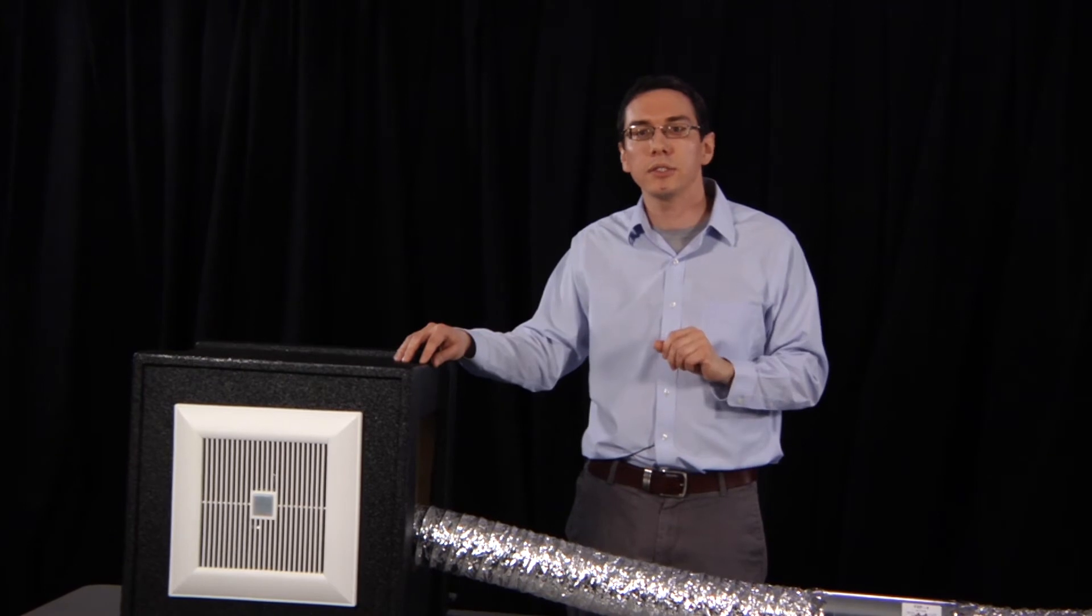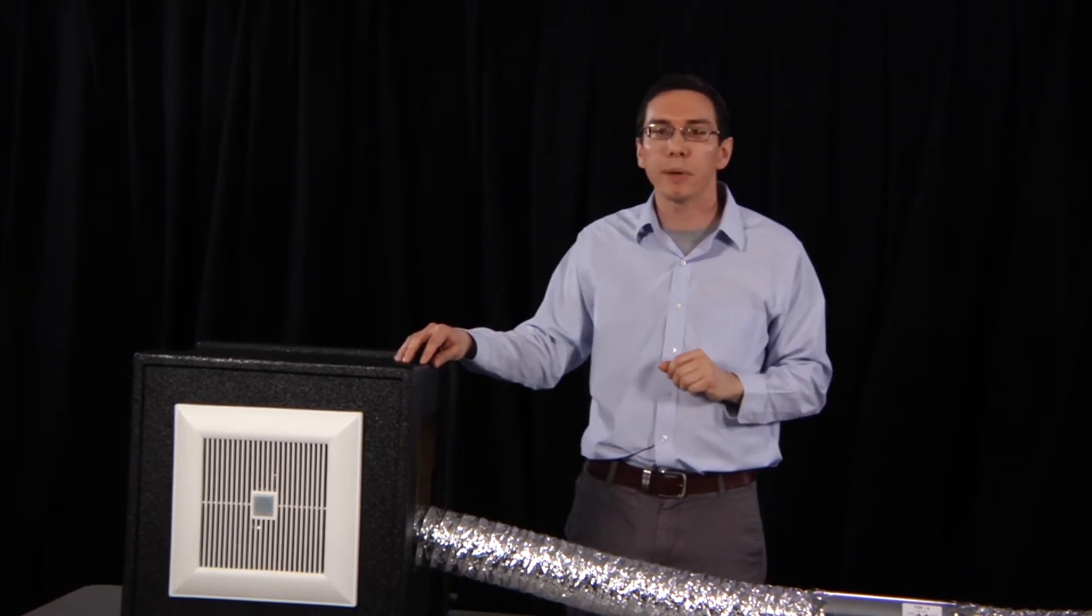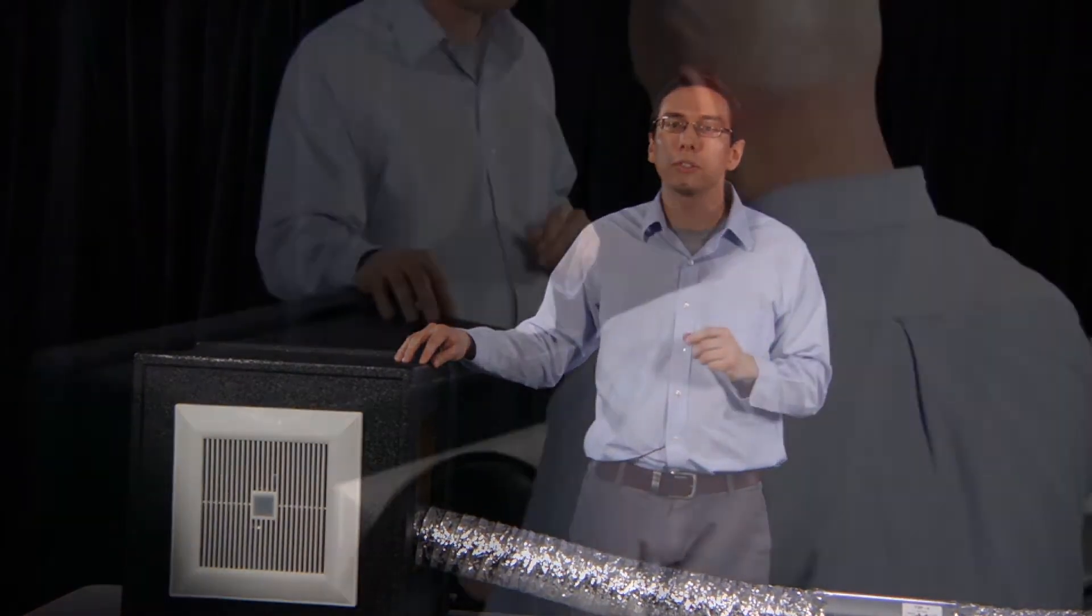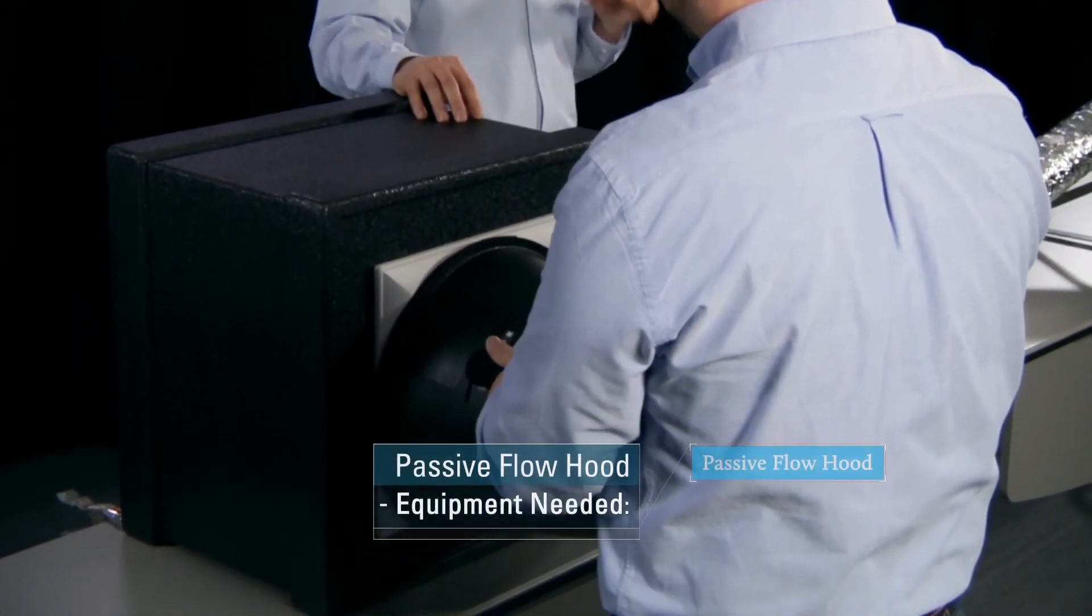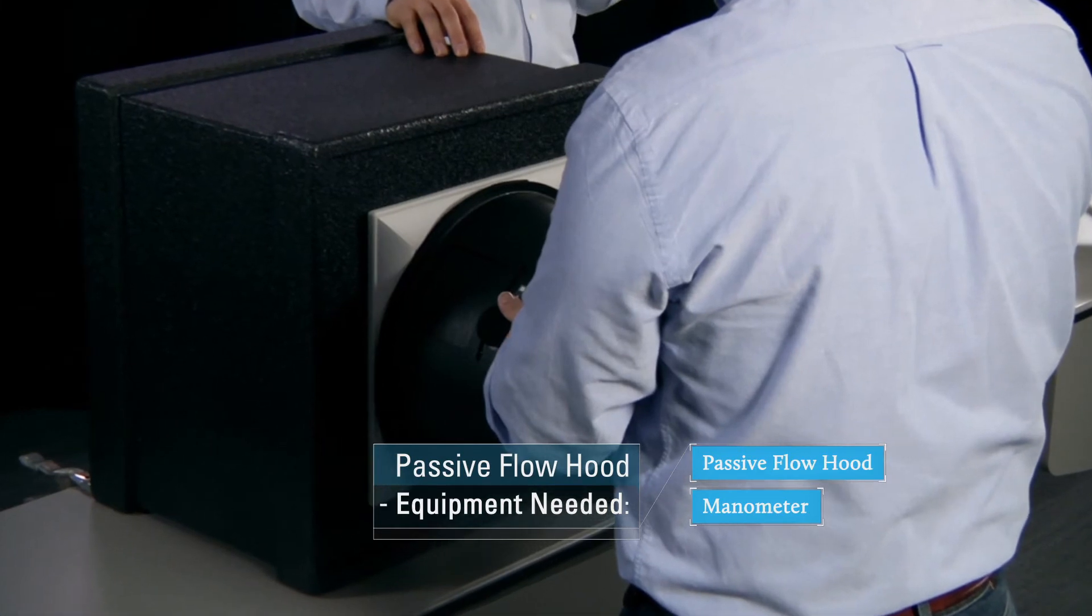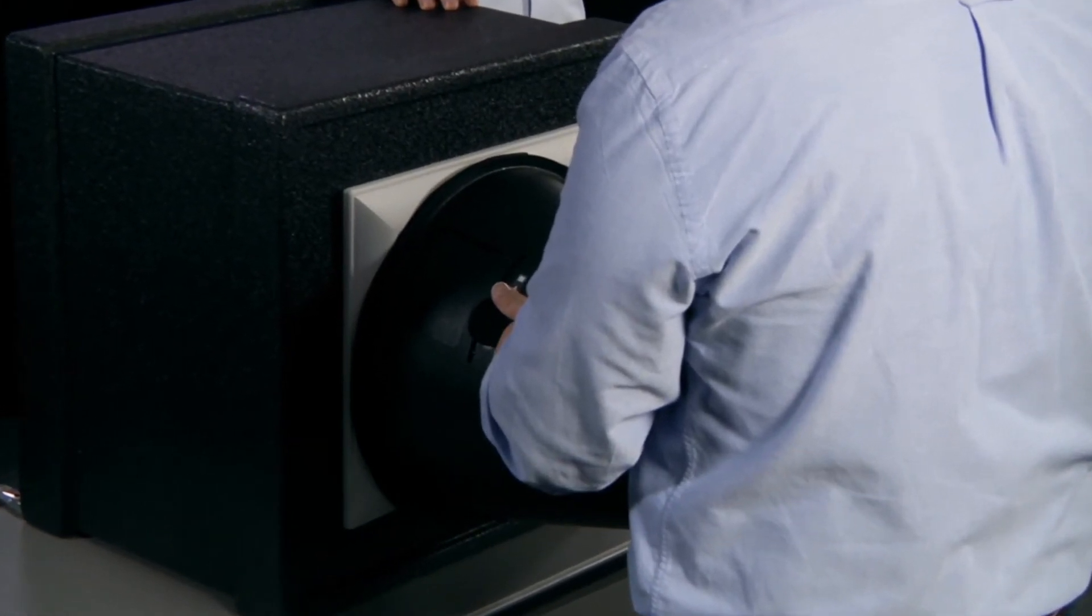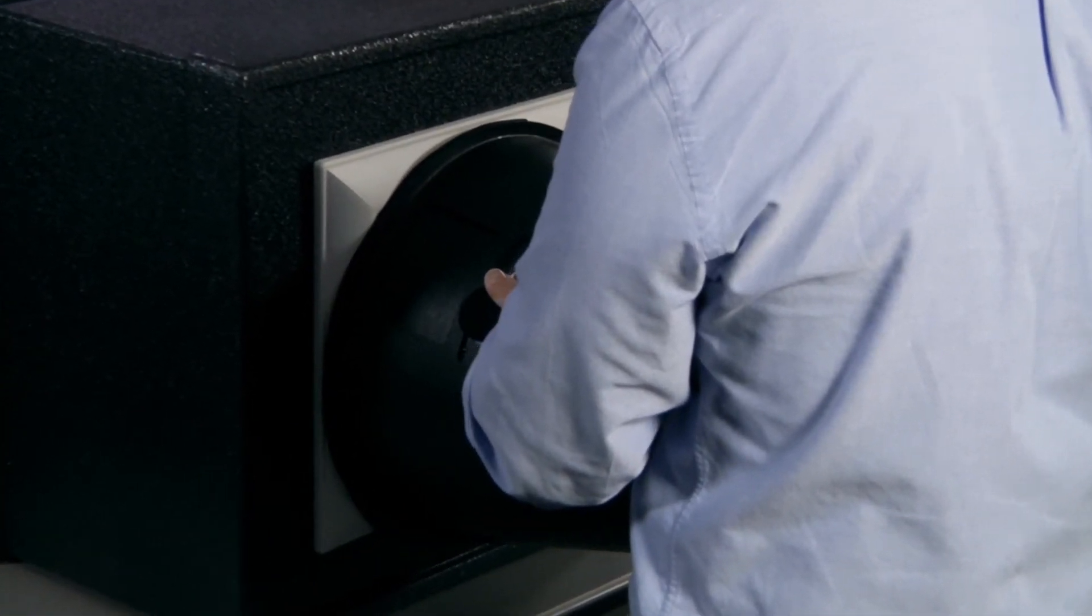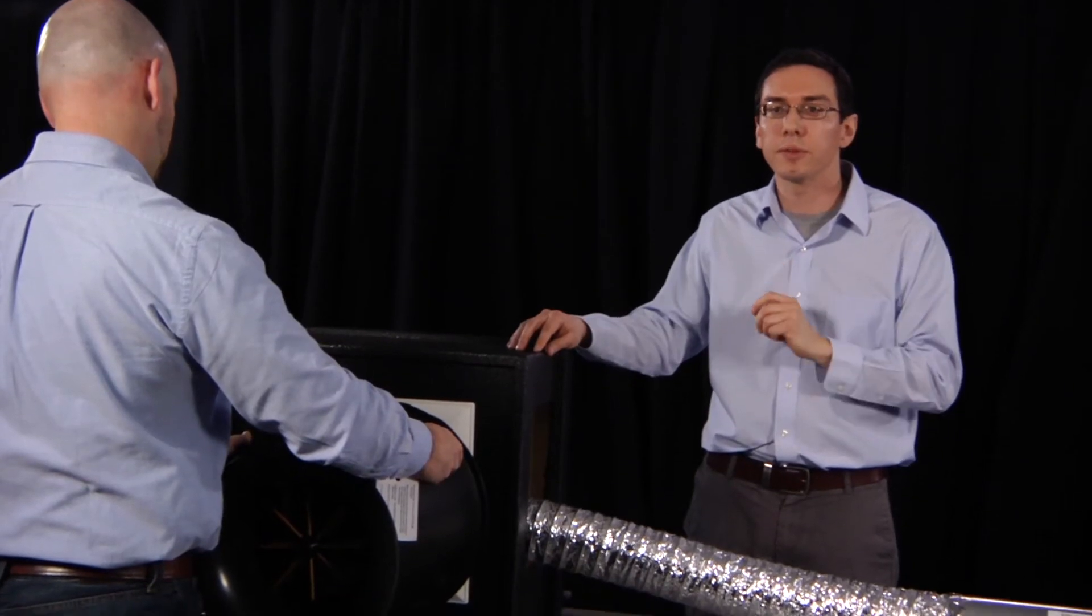Last but not least, James will show you how to measure the airflow with a passive flow hood. Like the other two devices, you'll just need it and a manometer. This is very similar to the powered flow hood procedure, but we'll just need to confirm the pressure difference is still less than eight pascals, so we're confident that the results are accurate.